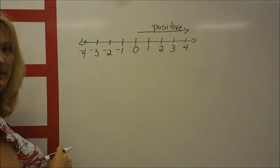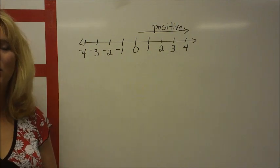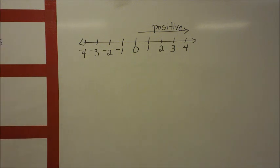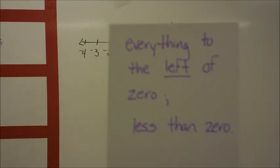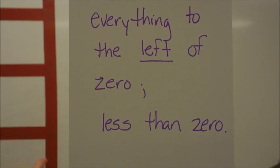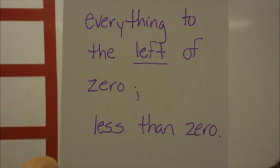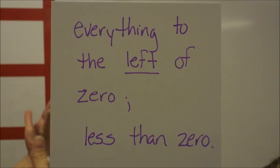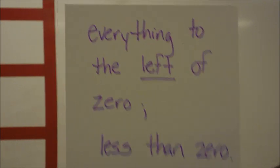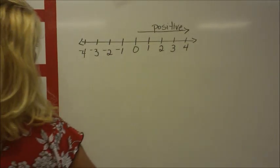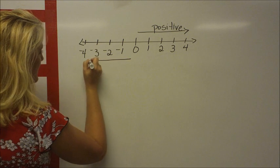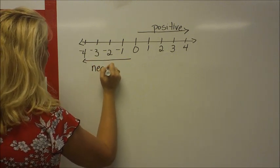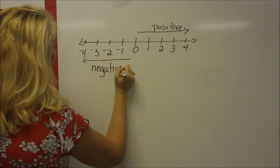Negative one is negative. Next vocabulary word — turn to the N's. The word is negative, N-E-G-A-T-I-V-E. That's everything to the left of zero, meaning less than zero. On your number line, the numbers to the left are your negative numbers.